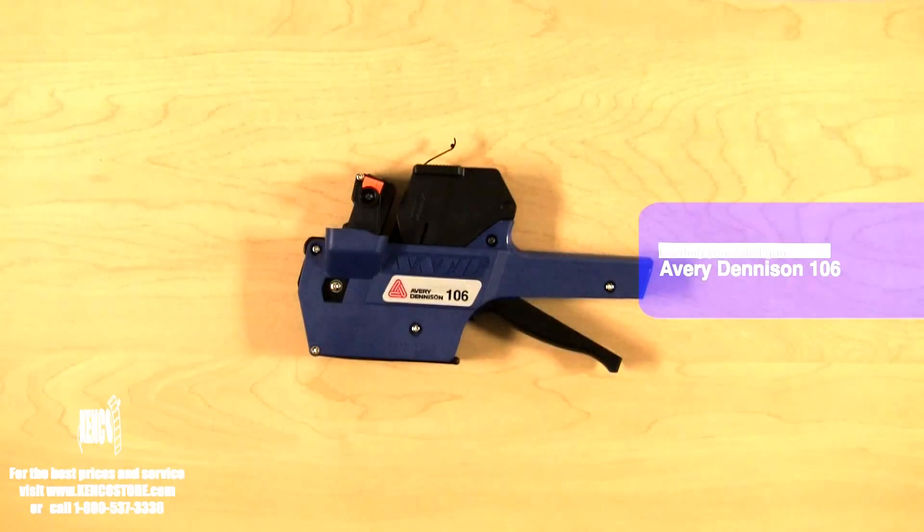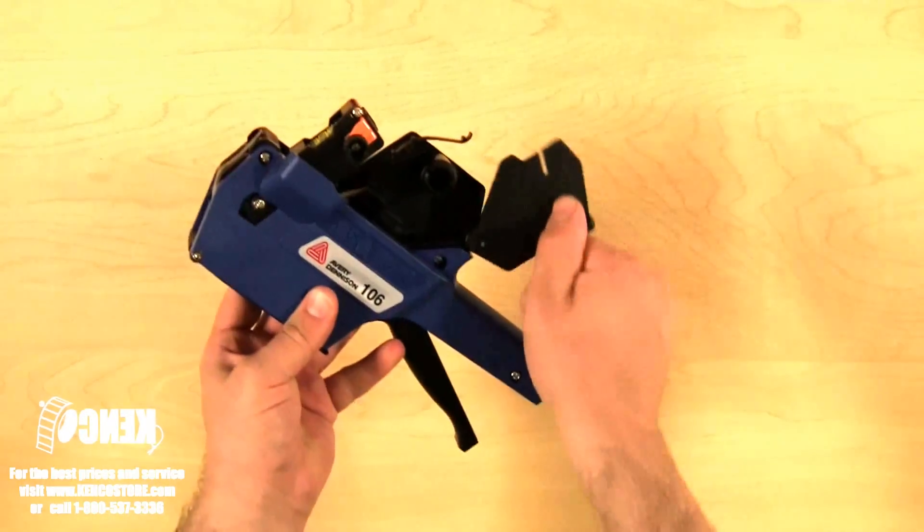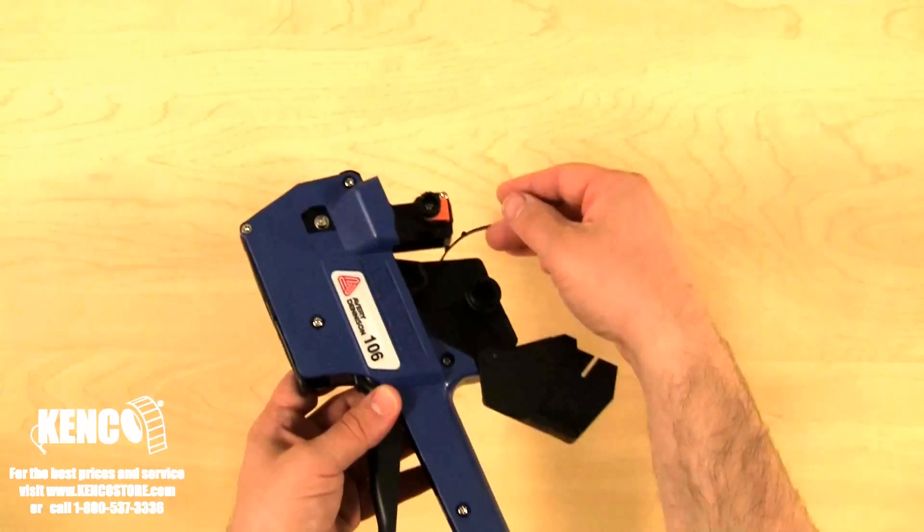These are the instructions for loading the AV Denison 106 gun. We're going to take the gun and open the label holder door. You'll notice that there's a spindle and a guide.